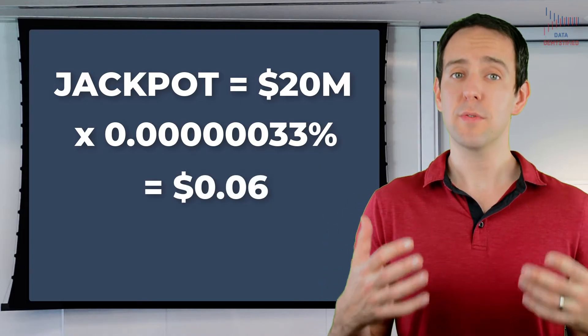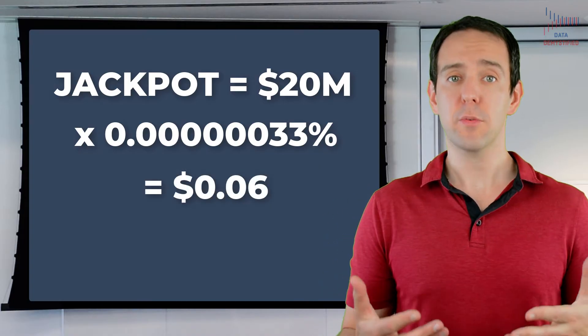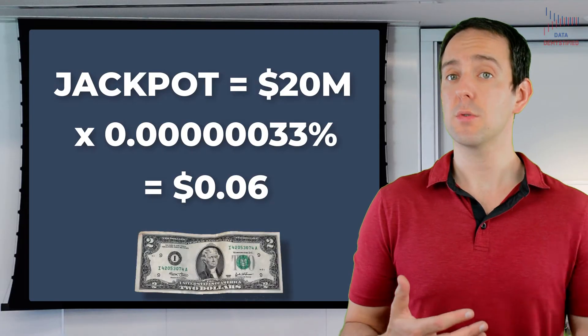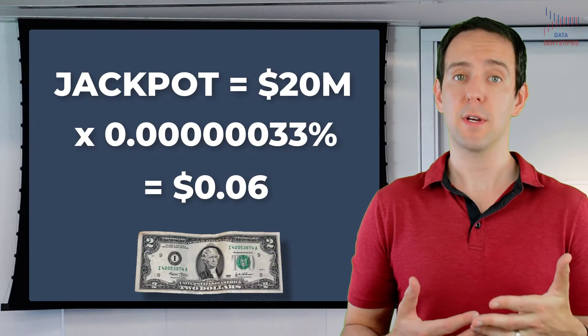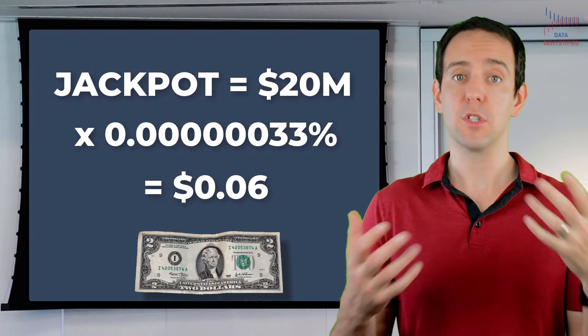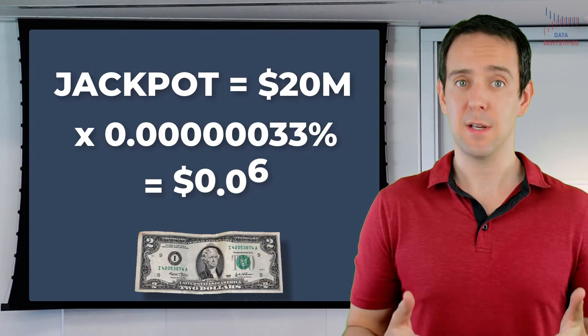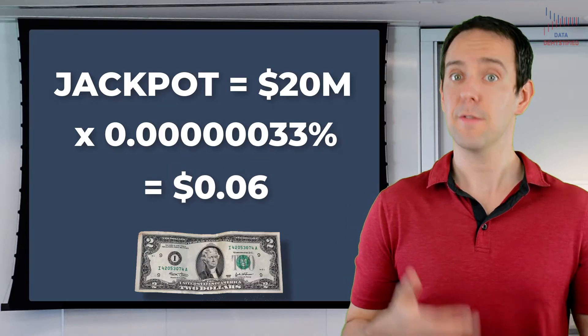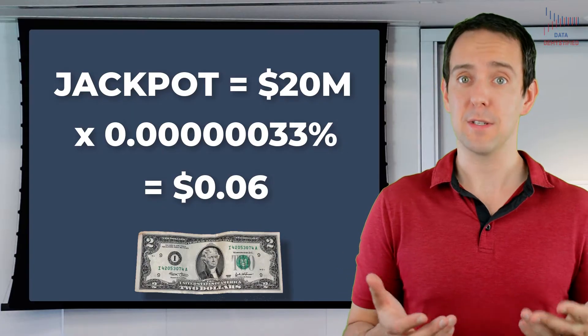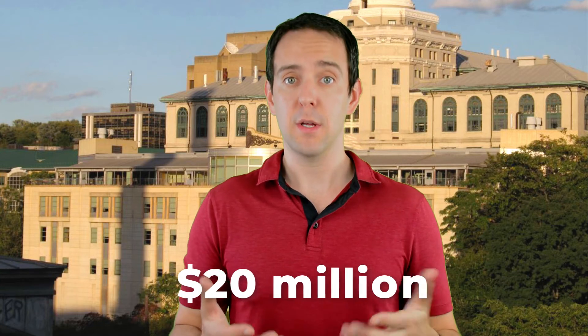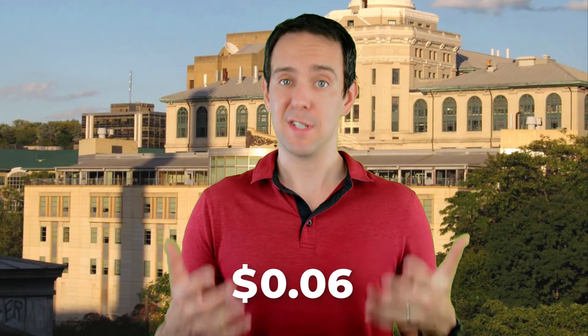So why is this useful information to know? It's useful because you have something to compare it to. A ticket costs two dollars, and what that expected value tells us is that the value of the lottery, if we just consider the jackpot, is six cents. In other words, you're buying six cents for two dollars. Not exactly the best deal. Now some of you may say, sure, that's true, but if you win the jackpot, it'll all be worth it. That's true of course, but the whole point of an expected value is that it allows you to combine both the likelihood of you winning, which is tiny, and the amount that you'd win. Doing that, we get that single number — six cents. That is the value of your two dollar ticket.